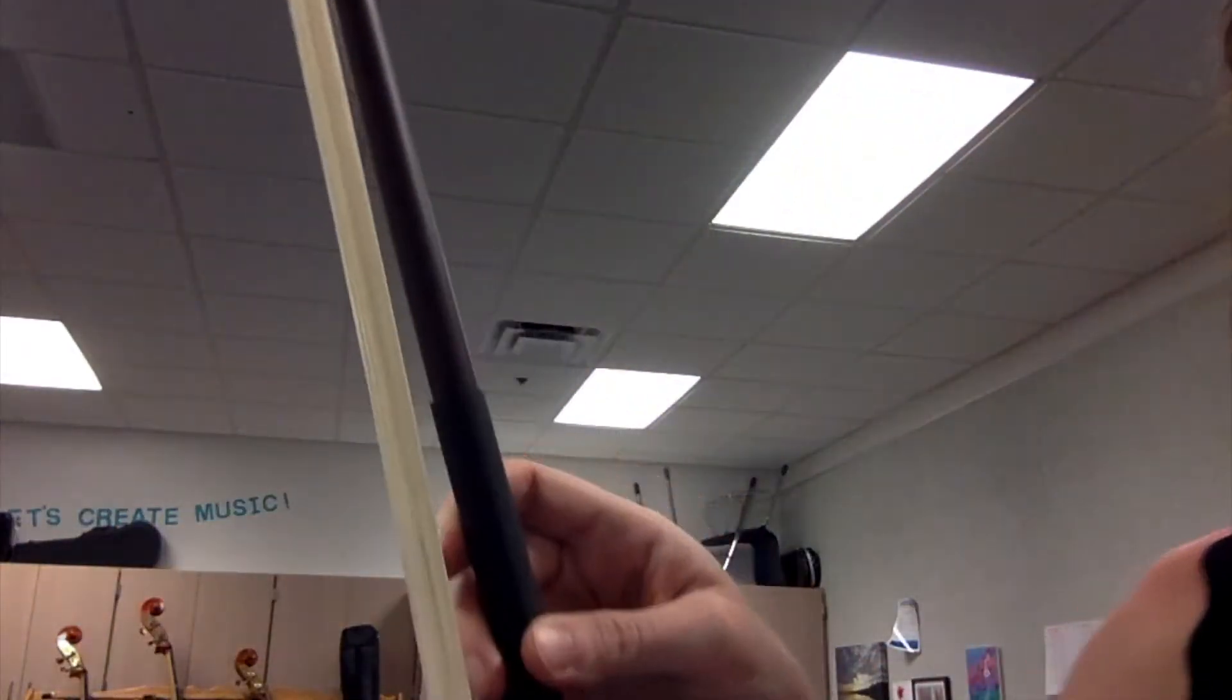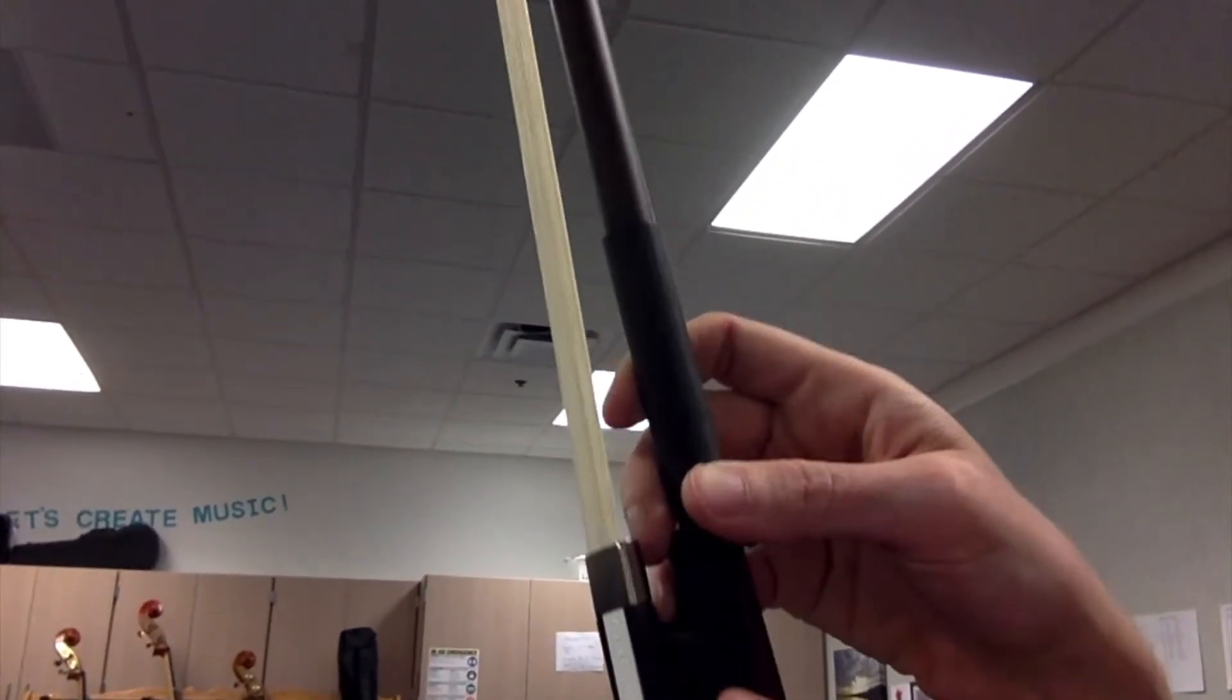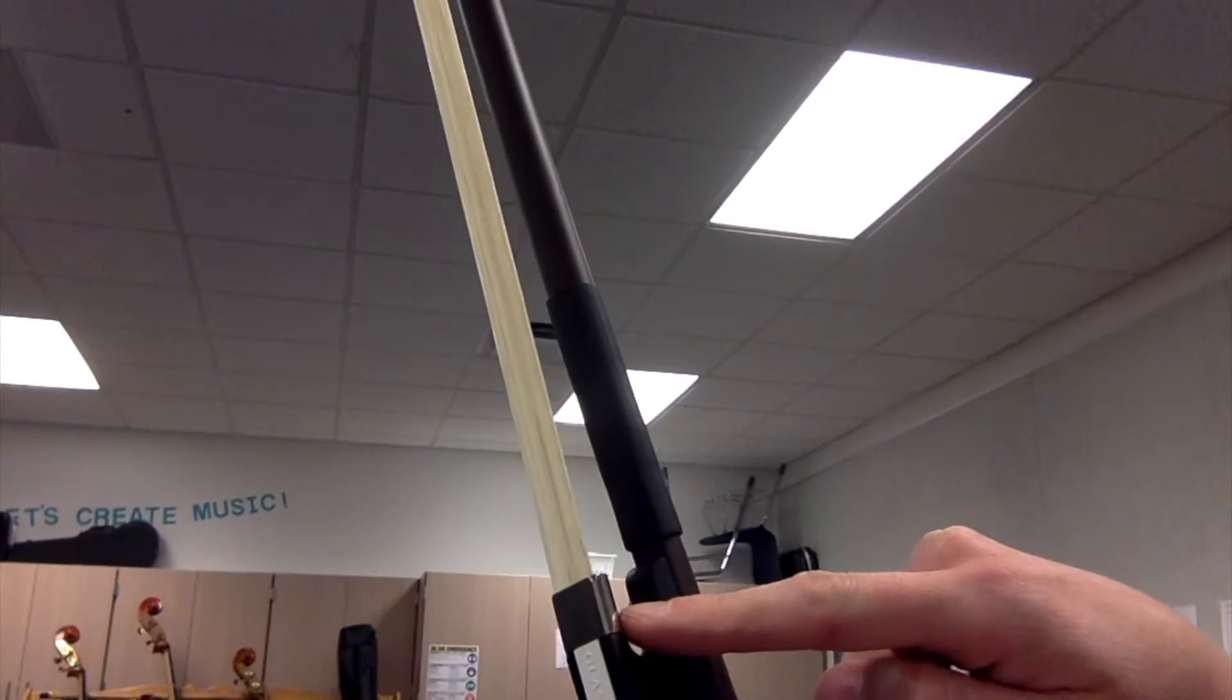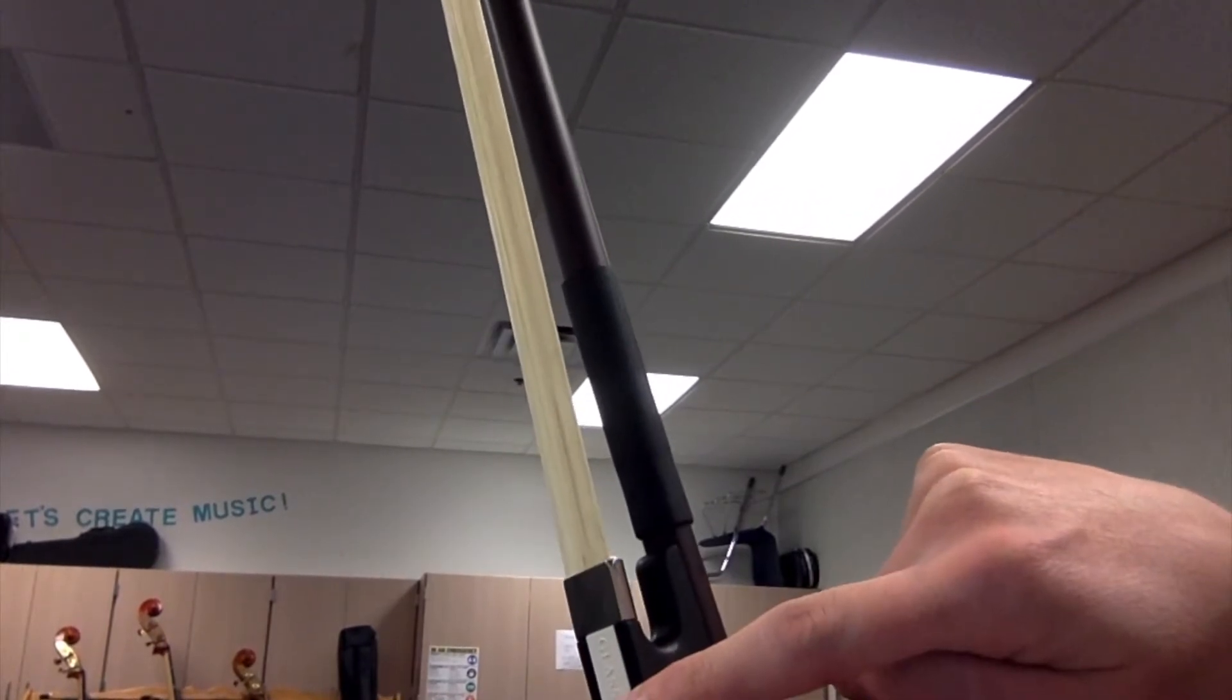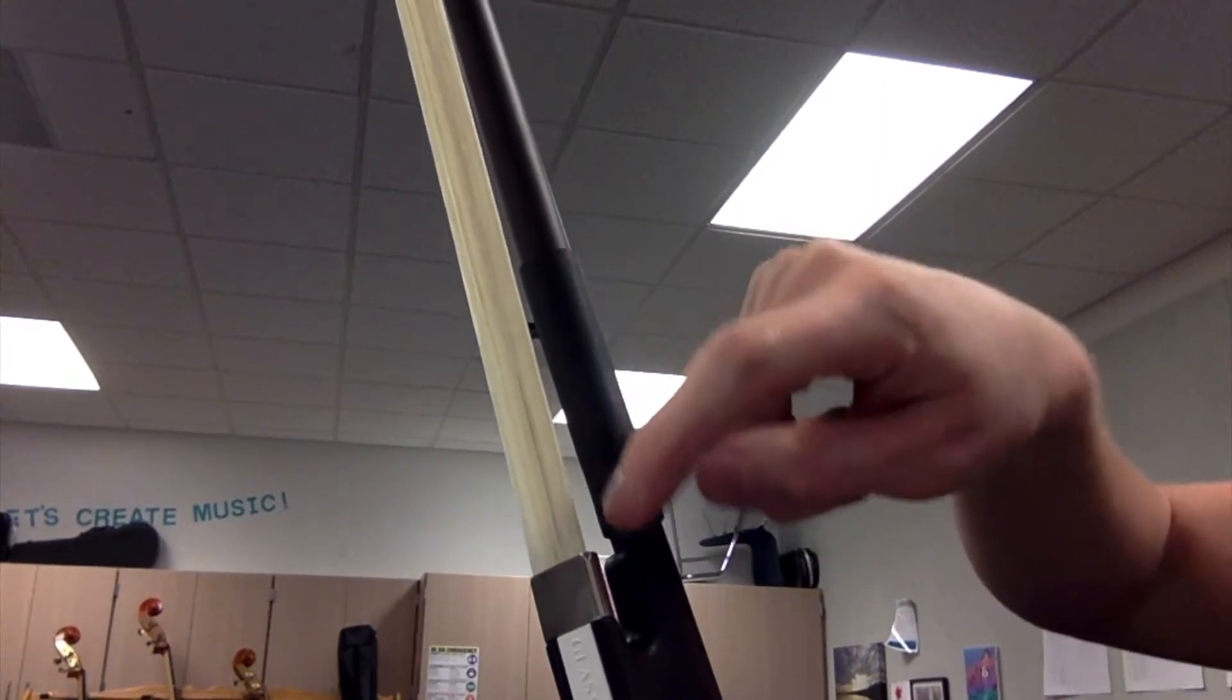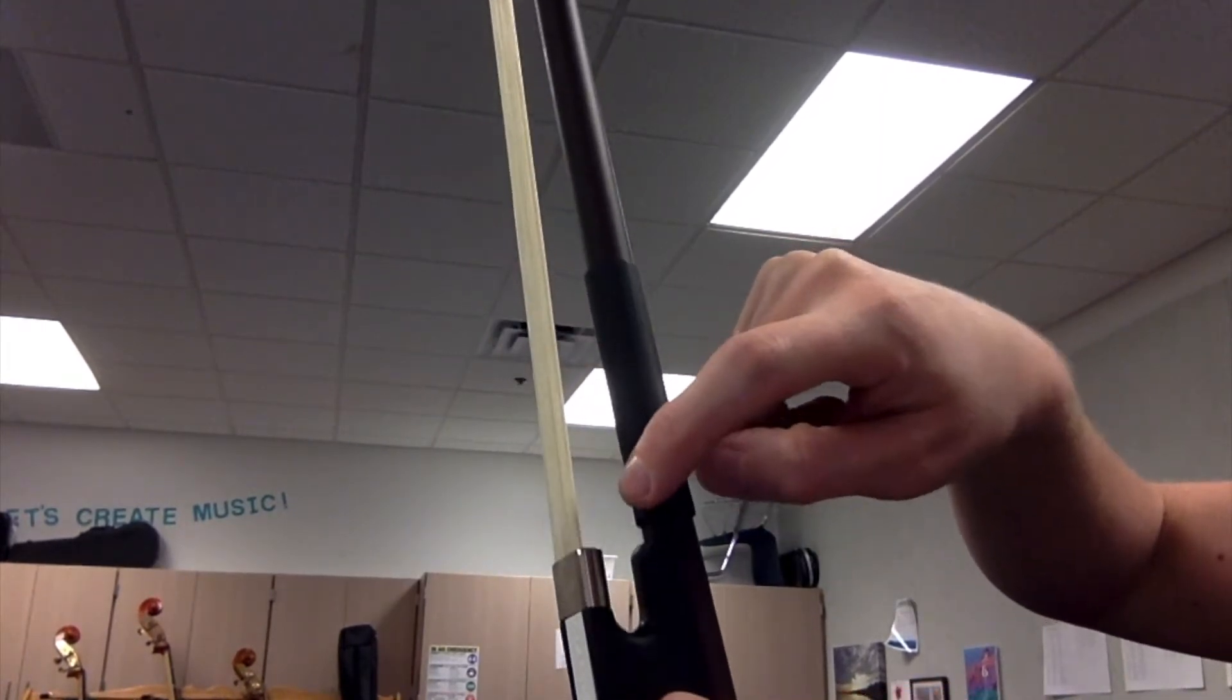Here's what you need to know. Step 1. Your thumb does not go inside of the frog. It does not go under the frog. It does not go through the bow. Instead, it rests under the stick right above the frog.